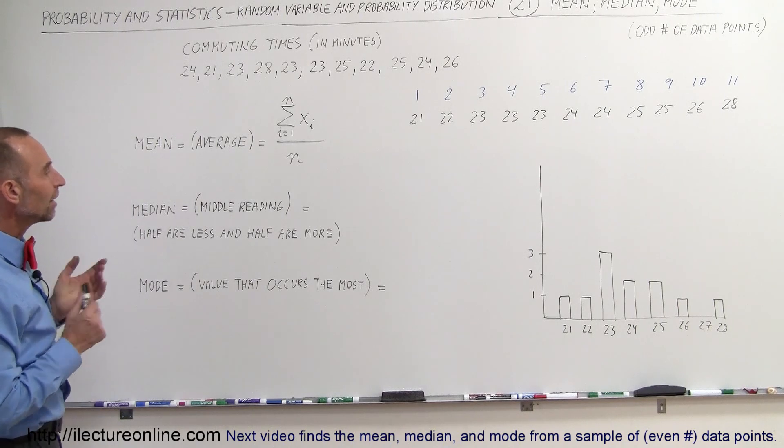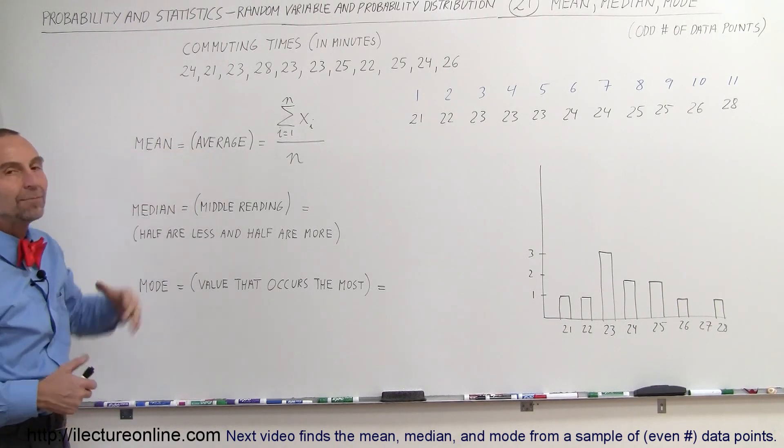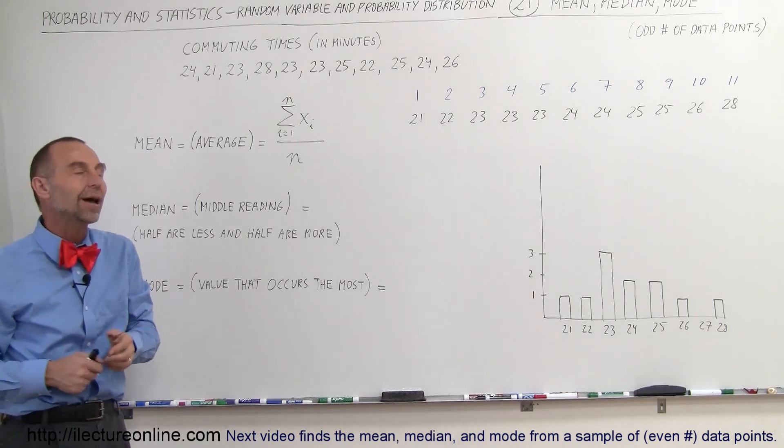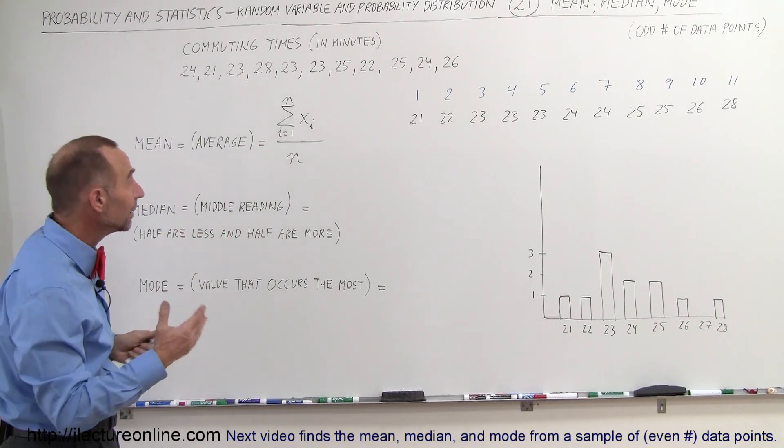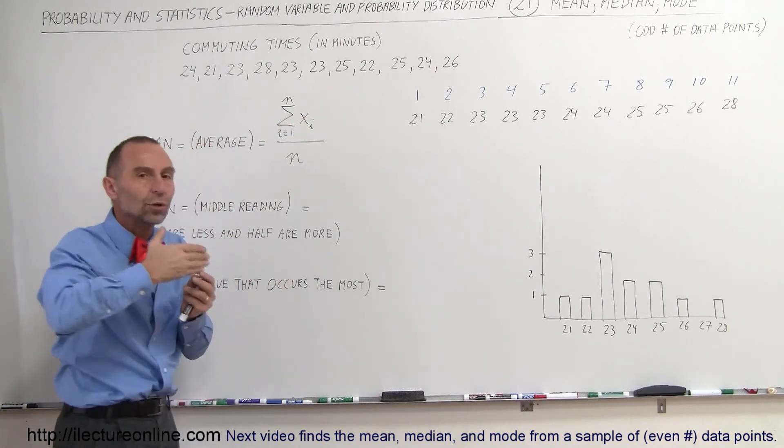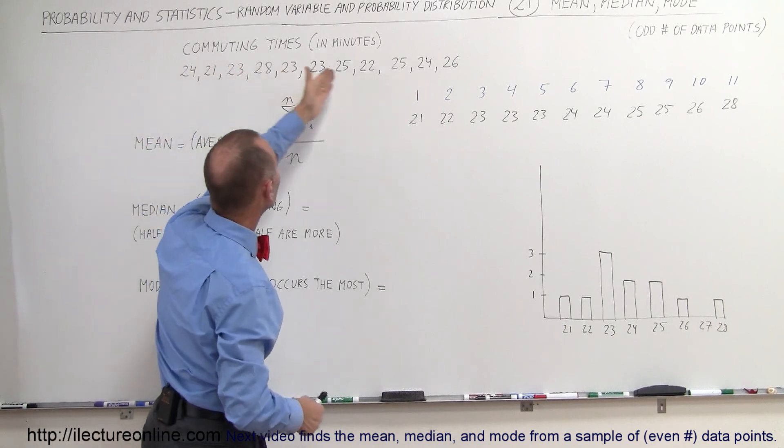Alright, so the next thing we want to do is we want to get the mean. Now the mean and the average really mean the same thing. It's the average value. What is the average commuting time? And this is the mathematical way of writing that. It looks a little complicated, but if you take a look at it, it's not so bad. This symbol right here means summation. You're going to add up a bunch of numbers. In other words, we're going to add up all the numbers.